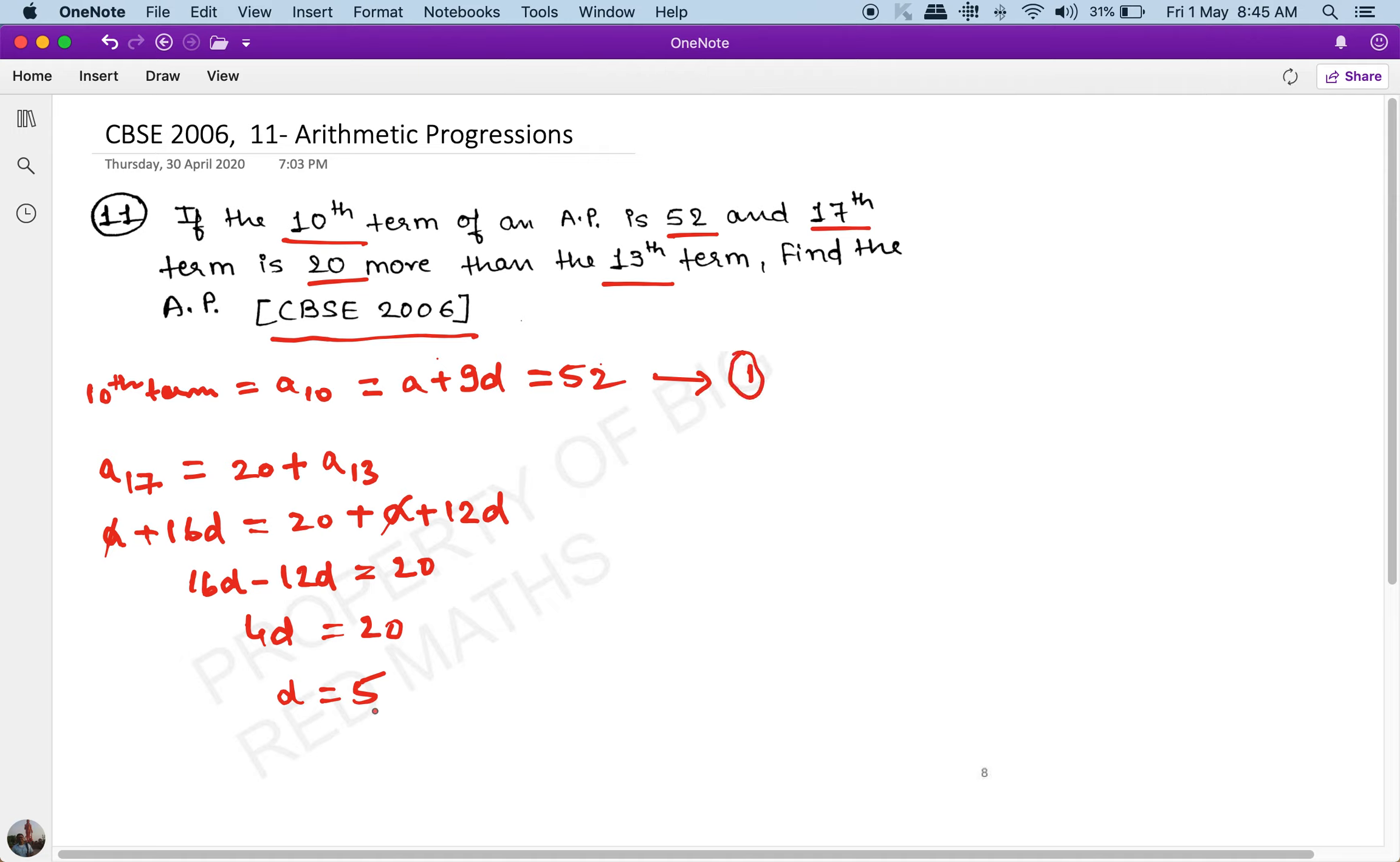The 10th term is 52, so I just have to put d = 5 in equation 1. What I get is a + 9d = 52. I don't know a, which I have to find. d is 5, so this is 9 × 5 = 45. Therefore, a + 45 = 52, and a = 7.